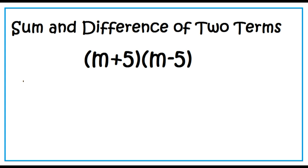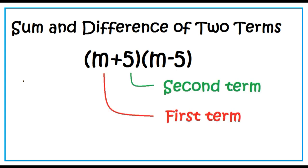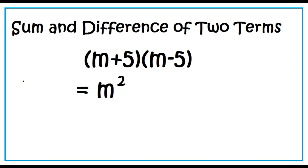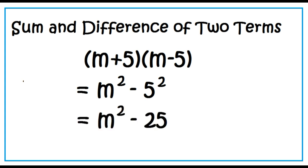The quantity m plus 5 times the quantity m minus 5 is an example of sum and difference of two terms. The first term is m and the second term is 5. The product is just the square of the first term minus the square of the second term. 5 squared is 25, so the final answer is m squared minus 25.